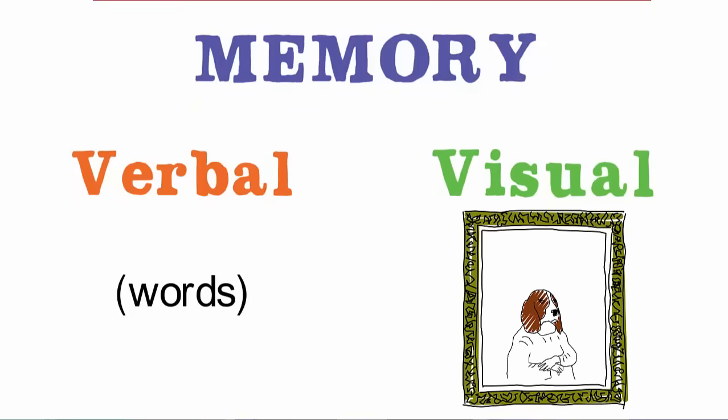You remember information in two main ways: as words, using your verbal memory, or as pictures, using your visual memory. They're different mental processes, and they achieve dramatically different results.